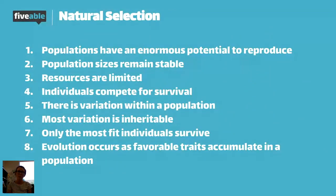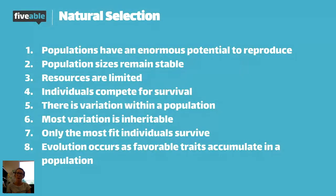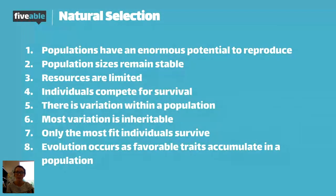There is variation within a population — this is going to be a big topic. Variation means there is change within a population: there are different alleles and different adaptations. When we look at a population, everyone doesn't look like an identical clone. Variation is essentially the most important part of natural selection — without it, there would be nothing to select for or against.